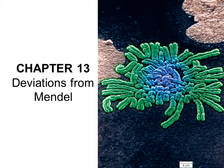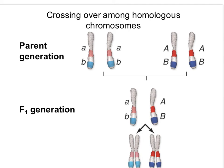Let's see what happens if the genes are located on the same chromosome, if you're looking at two genes at the same time and they are located on the same chromosome. Here we have the parents. One parent is homozygous recessive for both genes A and B. And the second parent is also homozygous, but homozygous dominant for both genes A and B.